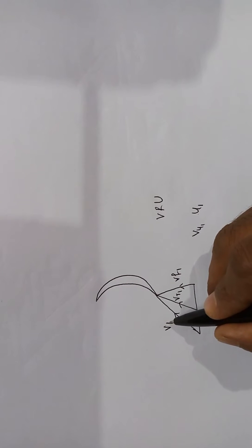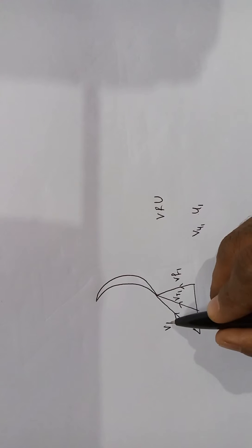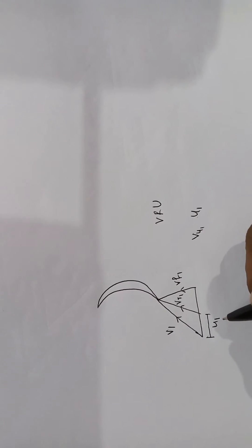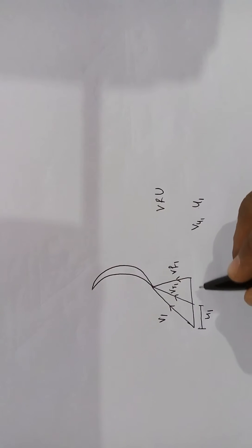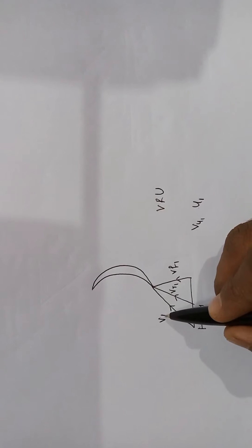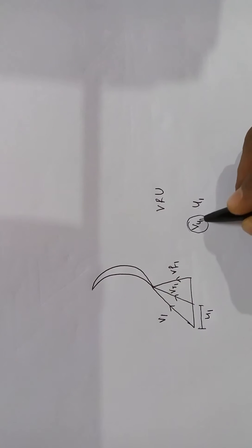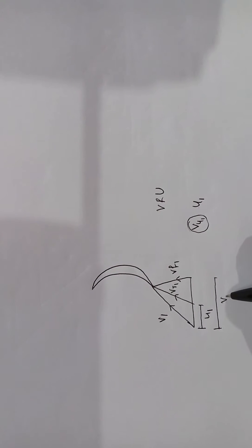The absolute velocity V1 to the relative velocity Vr1 — that distance will give U1. Always, horizontal velocity components start from the absolute velocity component, whether at the inlet or at the outlet. Here, from V1 to Vr1 is U1. The other velocity component, Vu1, is the horizontal velocity component with respect to the absolute velocity V1 — the distance from V1 to Vf1 gives Vu1. This is for the inlet.